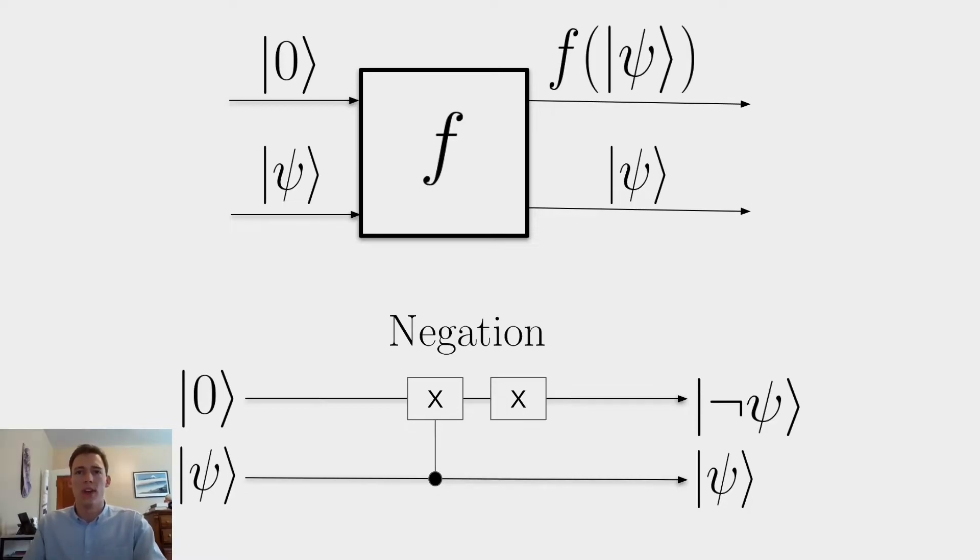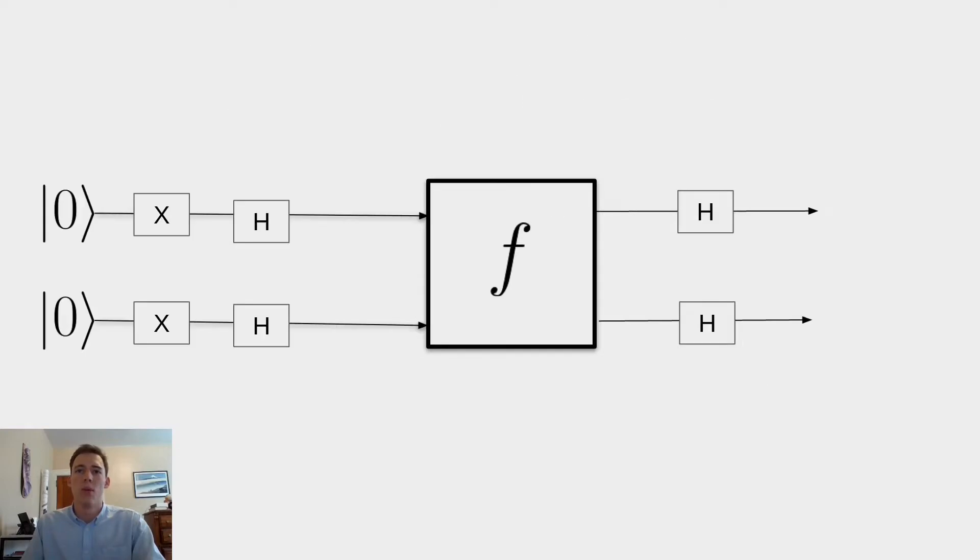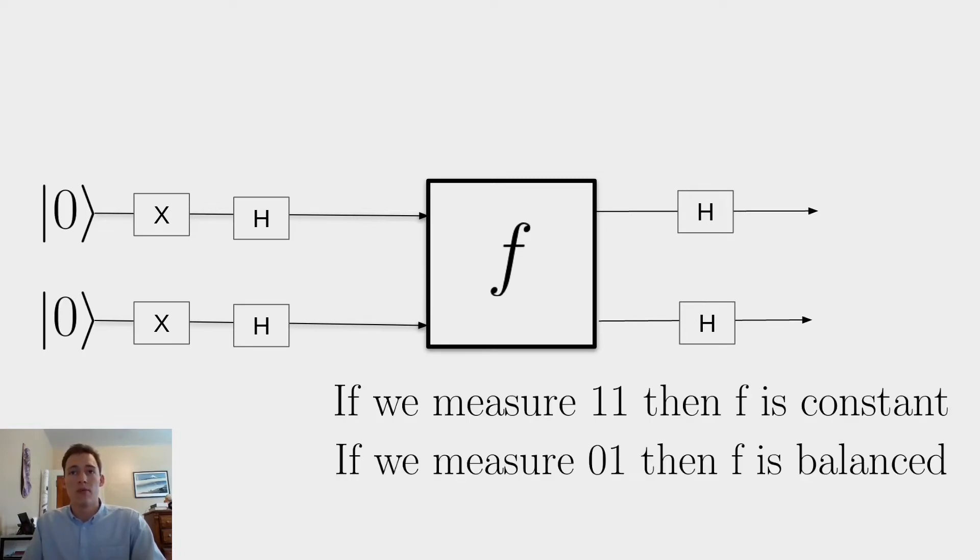So how do we actually use Deutsch's algorithm to determine whether our f is constant or balanced? It's actually a pretty simple circuit. All we do is this, we prepare our two qubits in the zero state, apply an X gate to each of them to put them in the one state, then a Hadamard to put them into the minus state. We pass them through our f and we apply another Hadamard. And then all we do is perform measurement.